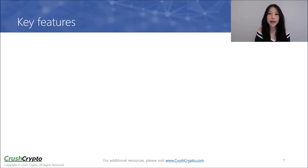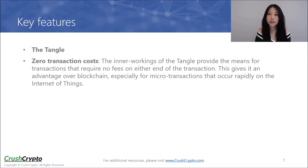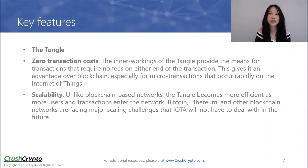So what are the key features of IOTA? The Tangle, as discussed earlier, is one of IOTA's key differentiating features. It also has zero transaction costs — the inner workings of the Tangle provide the means for transactions that require no fees on either end of the transaction. This gives it an advantage over blockchain, especially for microtransactions that occur rapidly on the Internet of Things. And unlike blockchain-based networks, the Tangle becomes more efficient as more users and transactions enter the network. Bitcoin, Ethereum, and other blockchain networks are facing major scaling challenges that IOTA will not have to deal with in the future.